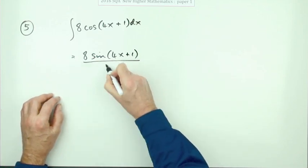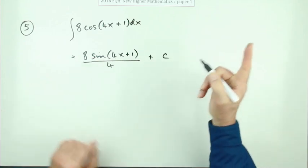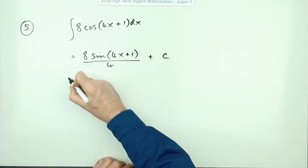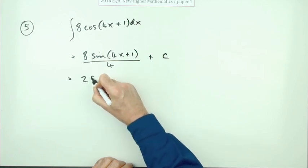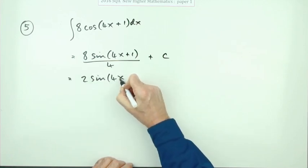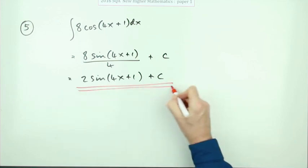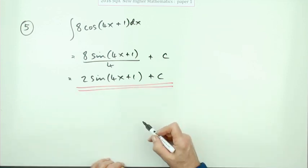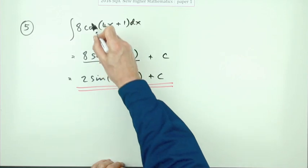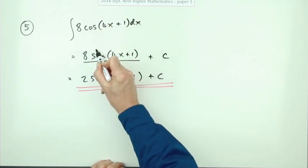So that then gives you two sine four x plus one plus a constant. Now the two marks were one for integrating this outside function, the cos, to produce sine, eight sine.